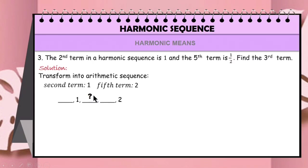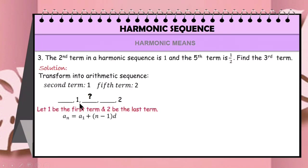To determine the next term after 1, we need the value of d, the common difference. We don't yet know the value of d, so we need to find it first. There are various ways to solve for the common difference — we can make two linear equations and solve them simultaneously, or we can use the formula a_n = a_1 + (n − 1)d, by letting 1 be the first term and 2 the last term.